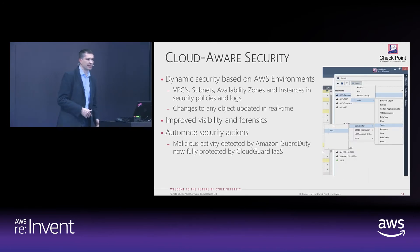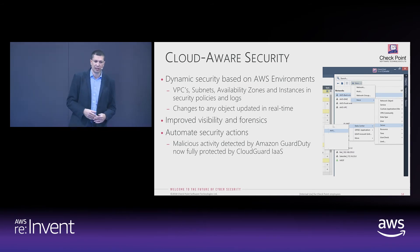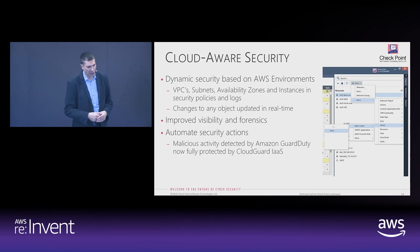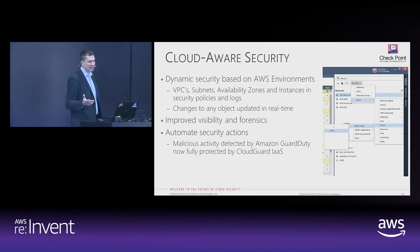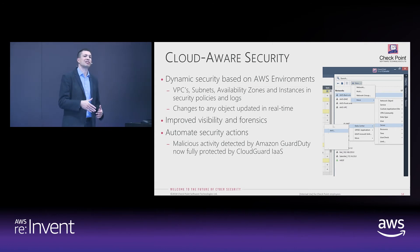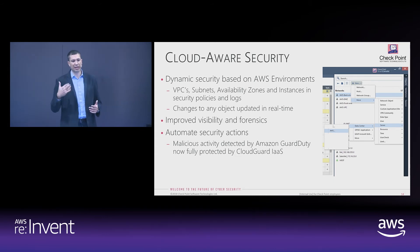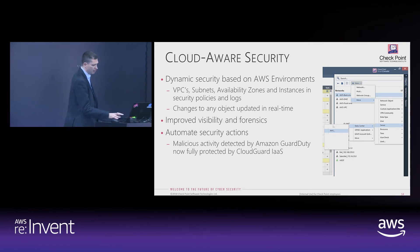The cloud-aware security is dynamic, based on the Amazon environment — VPCs, subnets, availability zones — all mapped through our Cloud Guard Controller, with changes to any object updated in real-time. For example, we did an integration with GuardDuty: any malicious activity detected by GuardDuty is automatically reported into Cloud Guard IaaS, and we're able to protect your cloud through that.